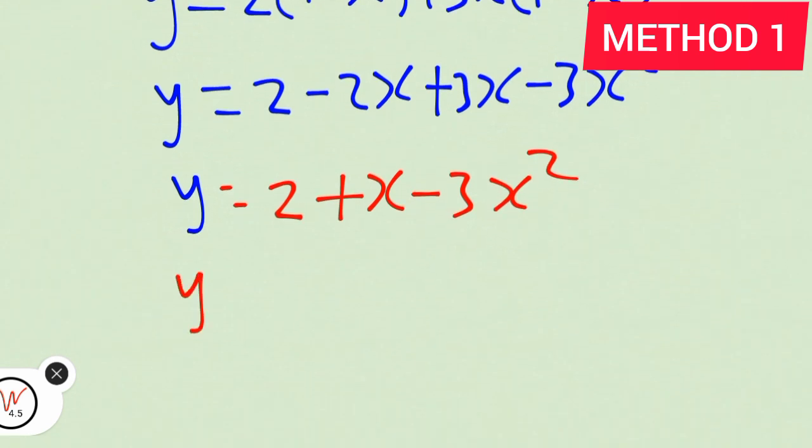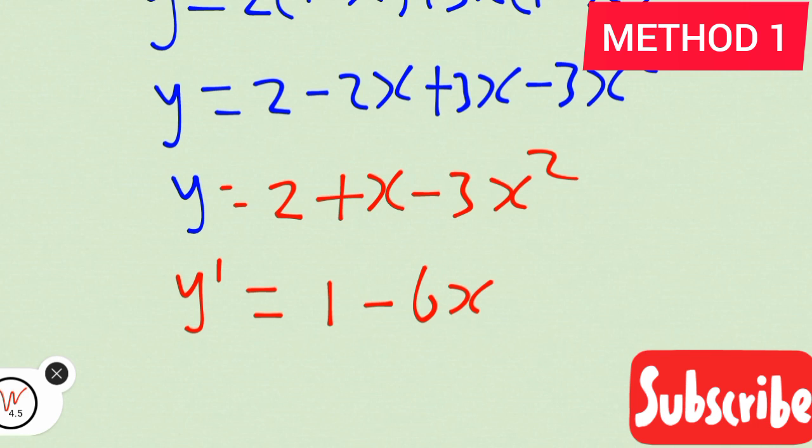Now let's differentiate. Our derivative becomes what? Differentiate 2, you have 0. Differentiate x, you have 1. Differentiate 3x squared, you have 6x. This is our answer: 1 - 6x.